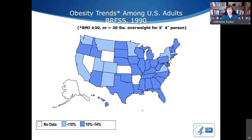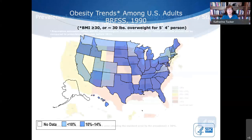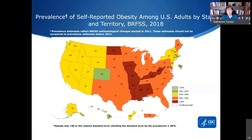We have an epidemic of obesity. Thirty years ago in 1990, there was no state with more than 14% of their population in the obese category. Zoom forward to 2018 and the majority of states have obesity above 30% of the population, and it continues to grow. It's very serious and one of the most important public health problems in the country.